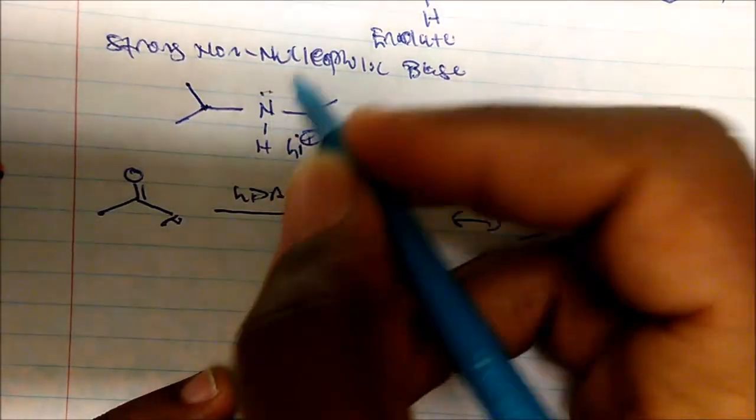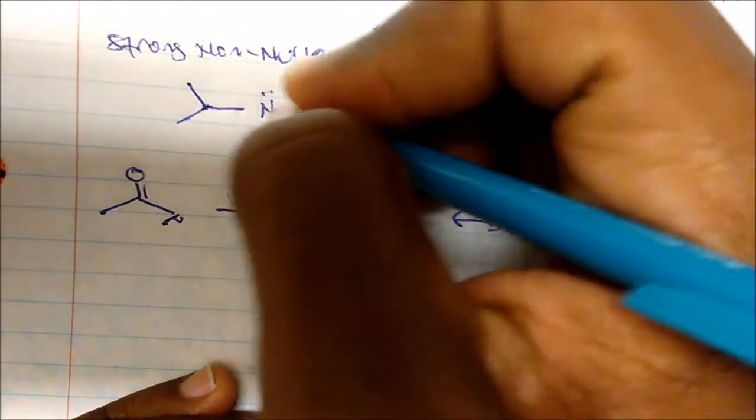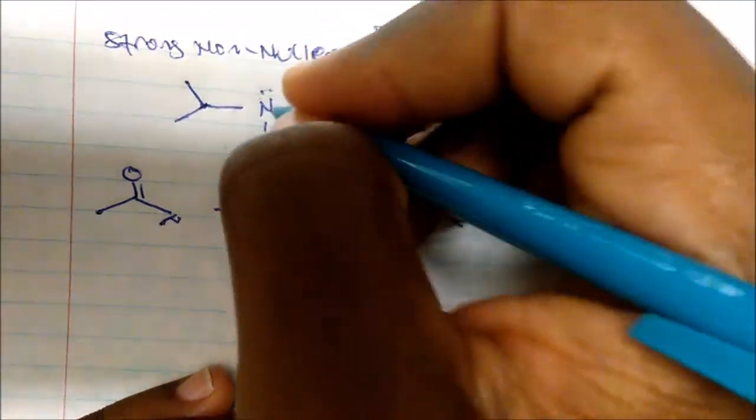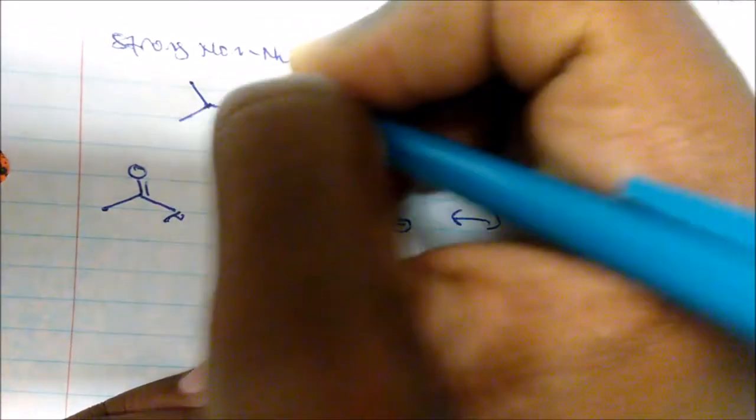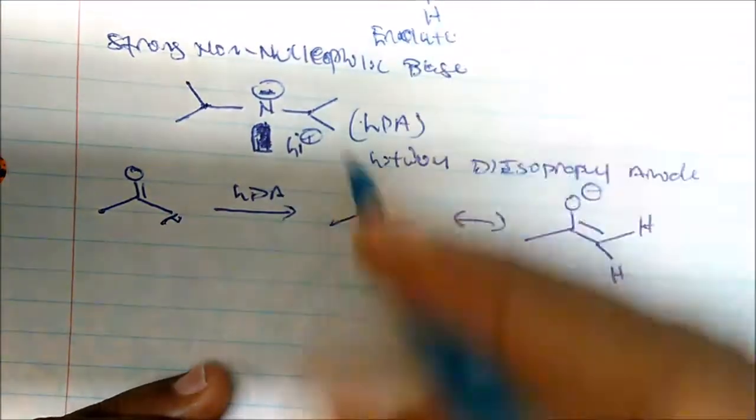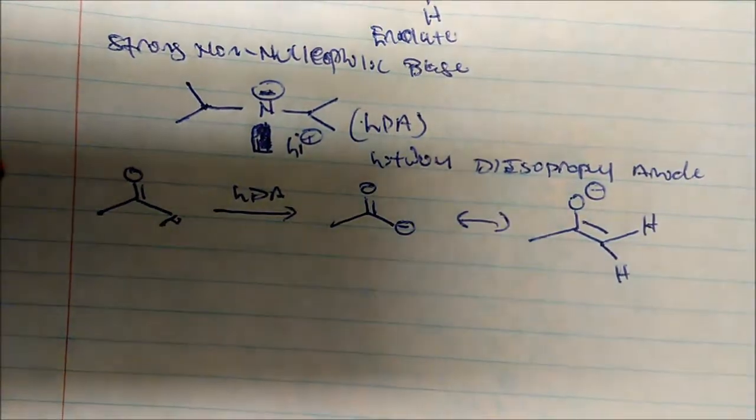I messed up on the structure of LDA. It has a lithium plus charge, but it also has a nitrogen that's negatively charged. So let me correct that structure. So that is the correct structure of LDA.